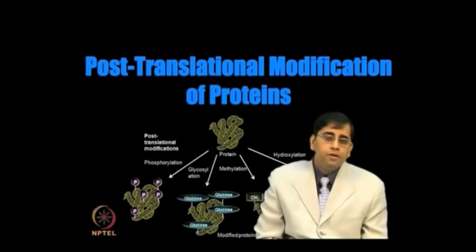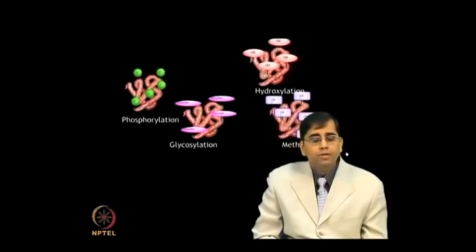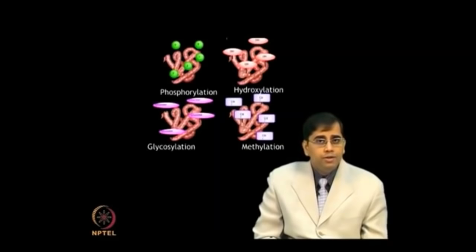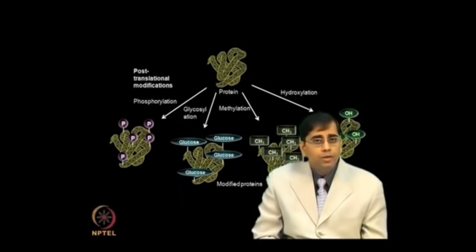A third important factor is post-translational modification of proteins. Proteins obtained by translation undergo folding and various post-translational modifications — such as phosphorylation, glycosylation, alkylation, and hydroxylation — to give the final functional protein. PTMs generate diversity, complexity, and heterogeneity of gene products, and their functional consequences can include modulation of protein dynamics and alteration of functional activity.